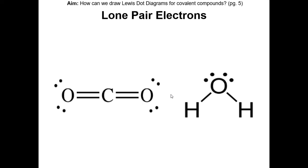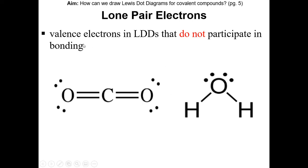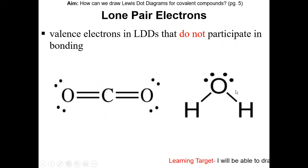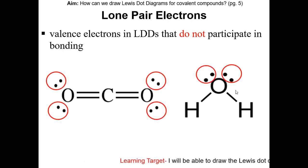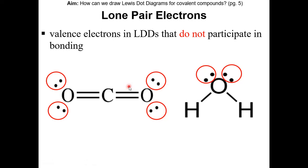Sometimes not all of the valence electrons in the atom will participate in bonding. This is known as lone pair electrons — valence electrons that do not participate in bonding. In these Lewis dot diagrams of carbon dioxide and water, I'm going to circle the lone pair electrons. The electrons participating in covalent bonding are represented by the lines, while the electrons that are not are shown as dots. These are the lone pairs — they are non-bonding electrons.